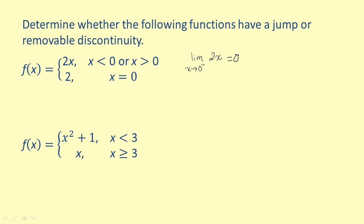Now let's look at the limit of f as x approaches 0 from the right. We have the limit of 2x as x approaches 0 from the right. Again, we substitute to find that the limit is equal to 0. Since the left and right limits are equal, the limit of f as x approaches 0 is equal to 0.